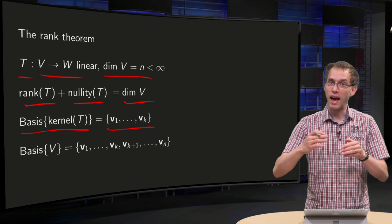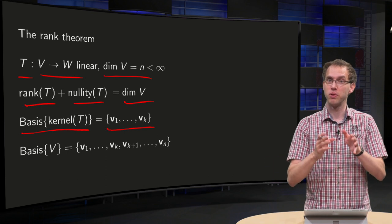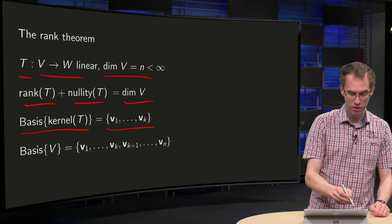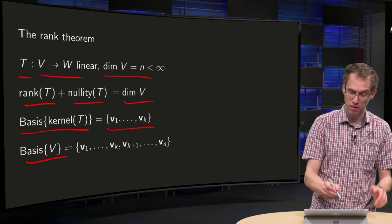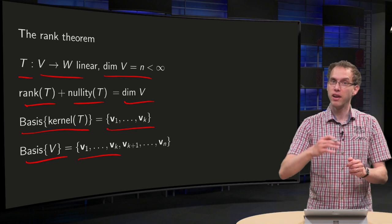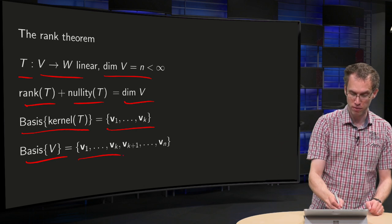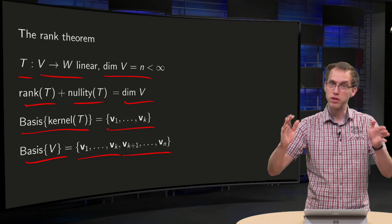So you can add vectors to this basis to get the basis of all of V. The basis of V will be the same vectors v1 up to vk, and then you have to add some vectors vk plus 1 up to vn to get the basis of all of V.